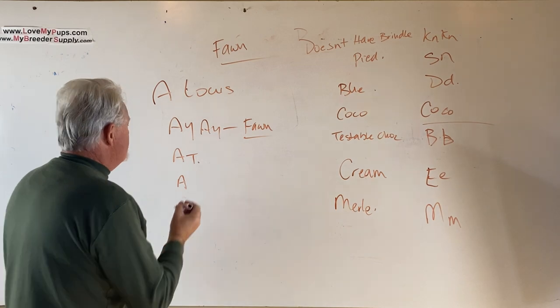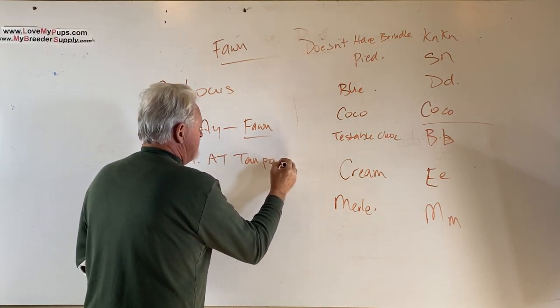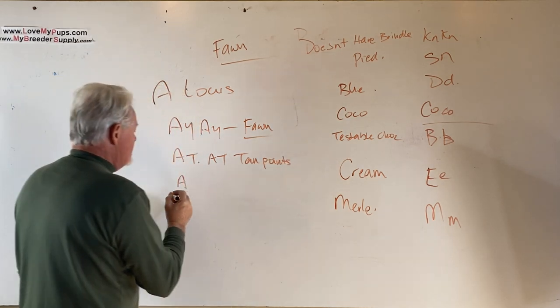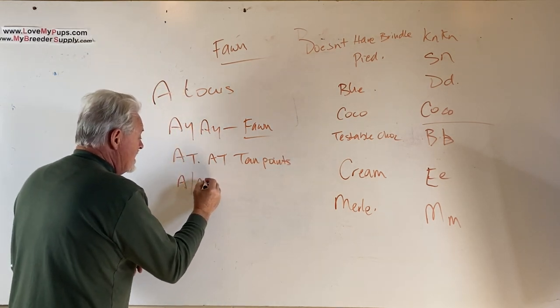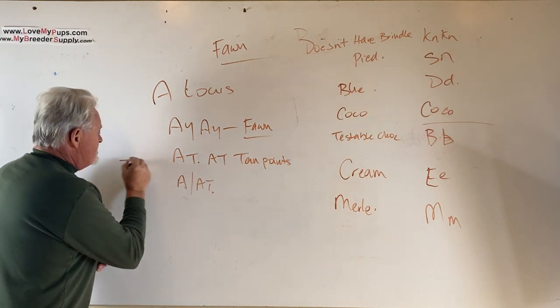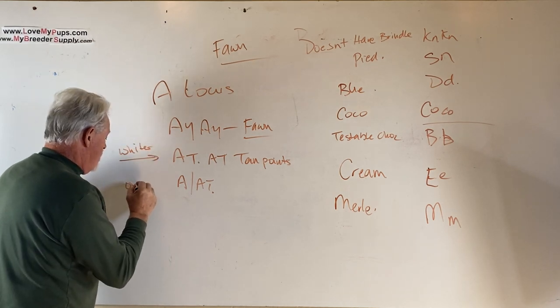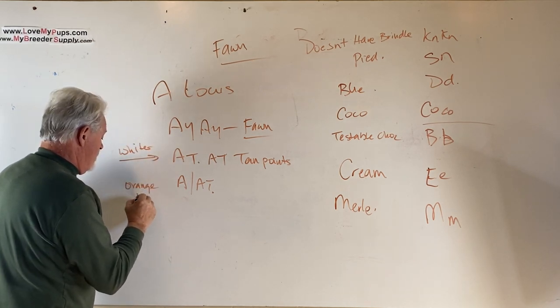The At gene—AtAt makes for tan points. So a dog that has tan points will be either AtAt or it could be AtA. Both of those together produce tan points. This tends to produce whiter points, and this one here makes more orangey points most of the time.